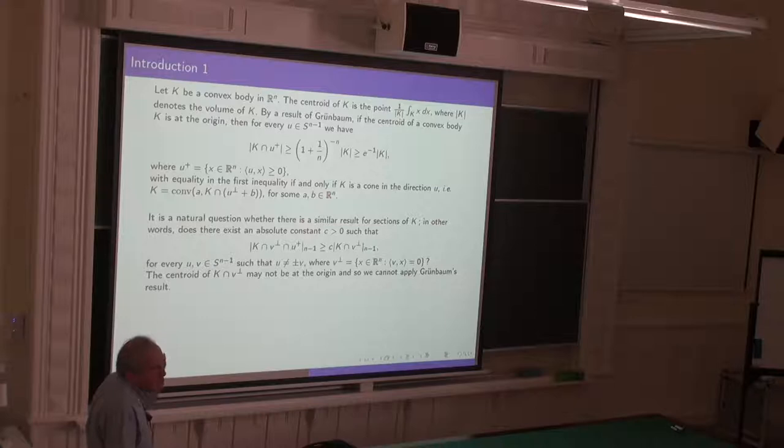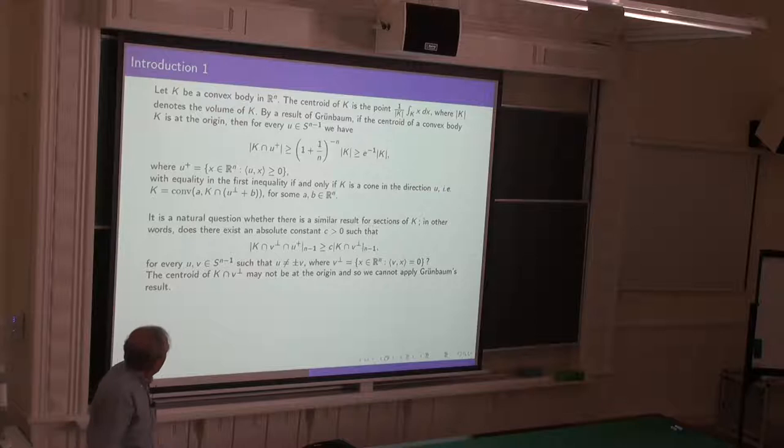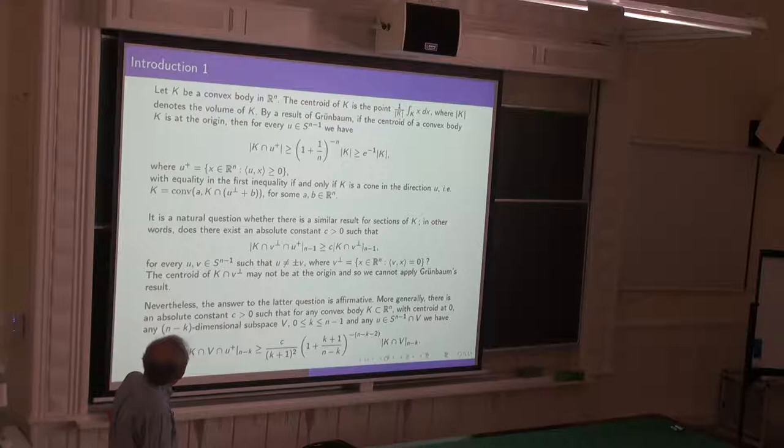There is no reason that the centroid of the section stays at zero when you intersect. The centroid is not too far, but it's much more difficult to compute things when you don't have this property of the centroid. It's an open question to measure the distance of the centroid of the section to the centroid of the original body when you are in a general position. The answer to this question is affirmative.